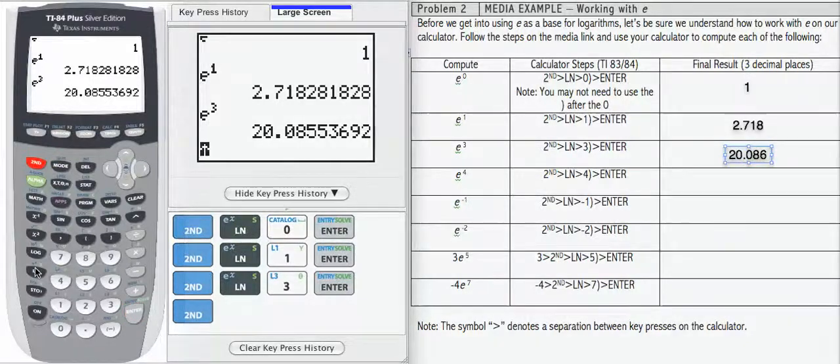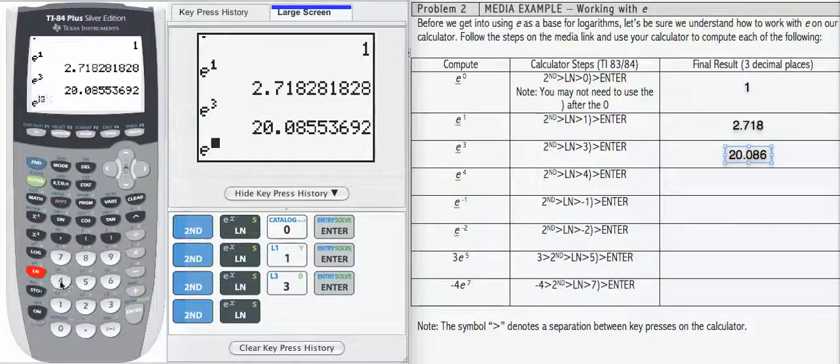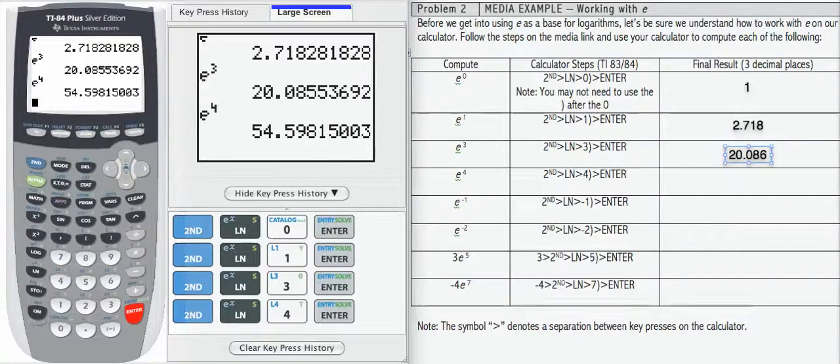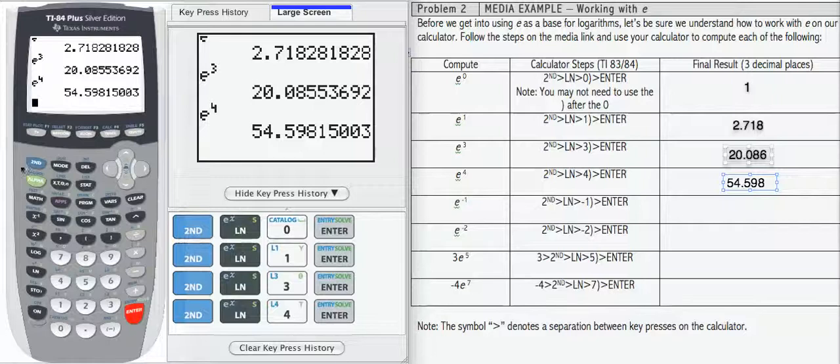We'll do one more here, e to the fourth, 54.598, and that is rounded to three decimals. Now let's try something a little bit different.